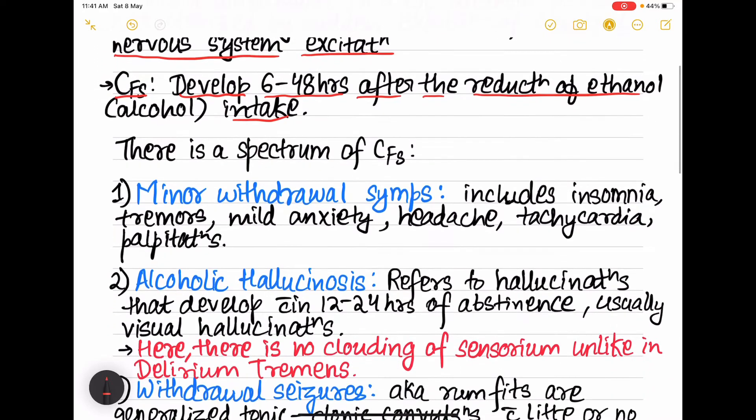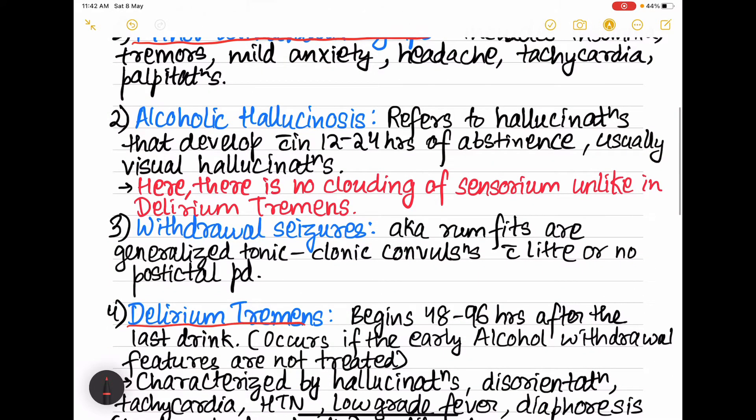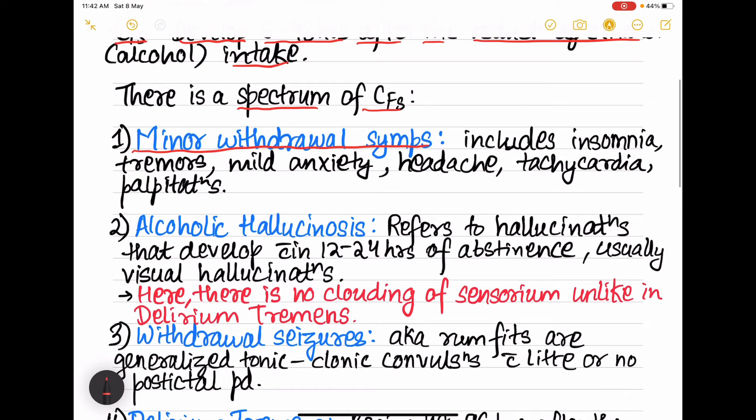Here we get a spectrum of clinical features ranging from minor withdrawal symptoms to delirium tremens. First is minor withdrawal symptoms. It includes insomnia, that is inability to sleep, then tremors, mild anxiety, headache, tachycardia, that is increased heart rate, and palpitations.